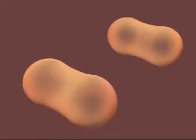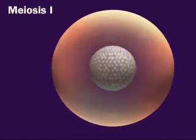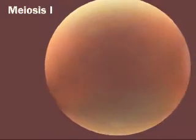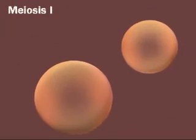Meiosis consists of two consecutive nuclear divisions per round of DNA replication. The two, called meiosis I and meiosis II, result in four haploid nuclei.